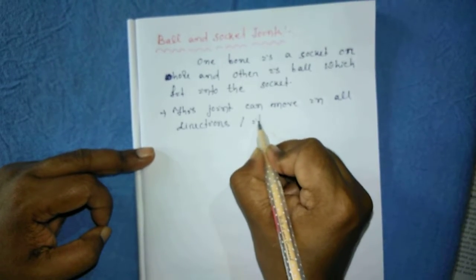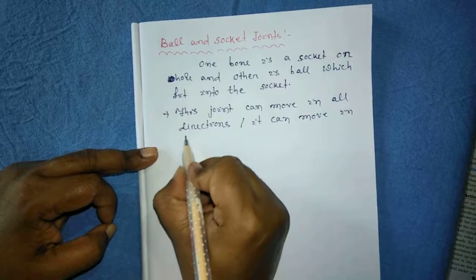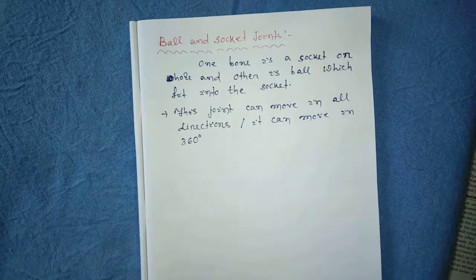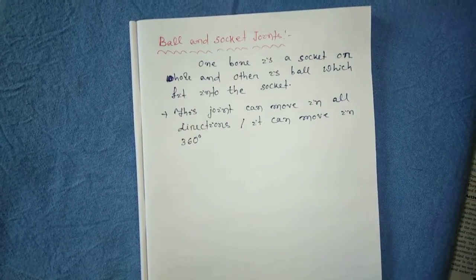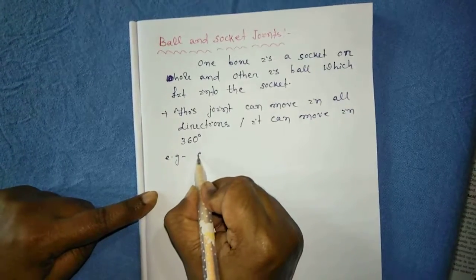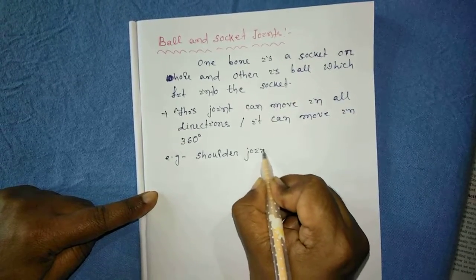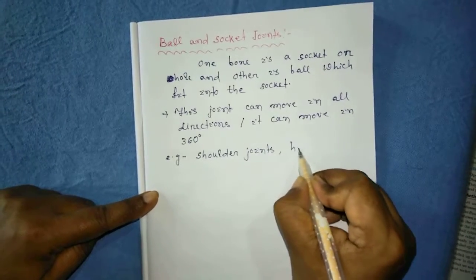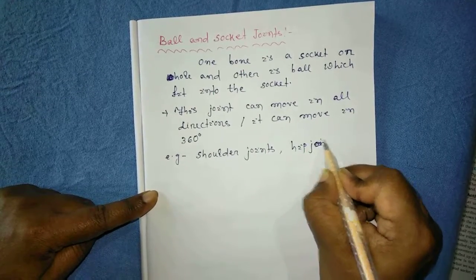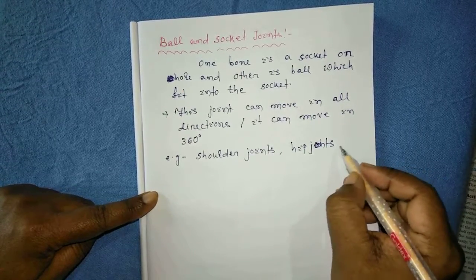It can move in 360 degrees — that is a complete rotation. Such a type of joint can do a complete rotation. Examples of such joints are shoulder joints and hip joints.